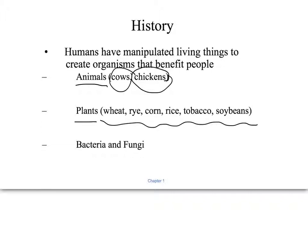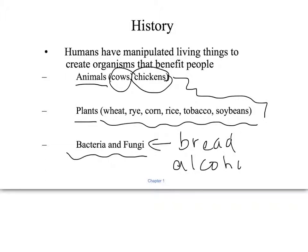With plants, we've been breeding since the beginning of agriculture — selecting for plants that are easy to harvest, that give the biggest seeds or the biggest fruit. This has been done traditionally too. A lot of times though, with these traditional breeding efforts, the breeding is checked using biotechnology to see if we got the result we wanted before we start growing it. We've also manipulated bacteria and fungi — using those to make bread, alcohol like beer and wine, and fungi to make cheese and yogurt.